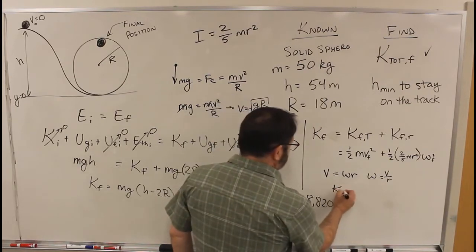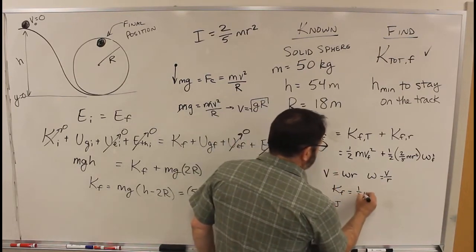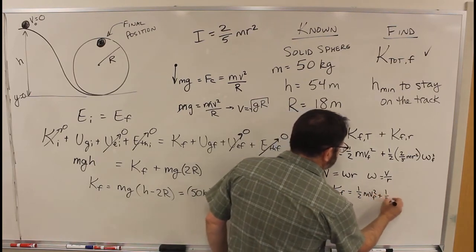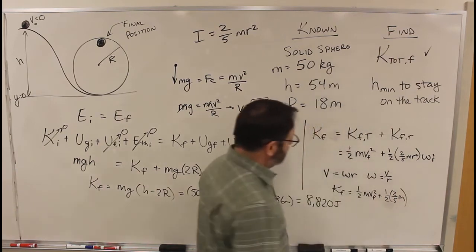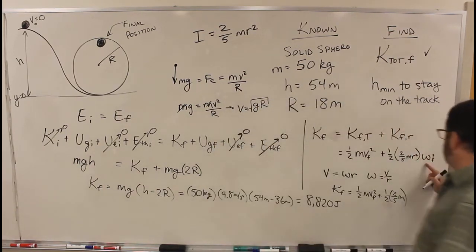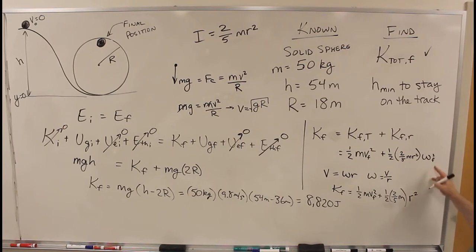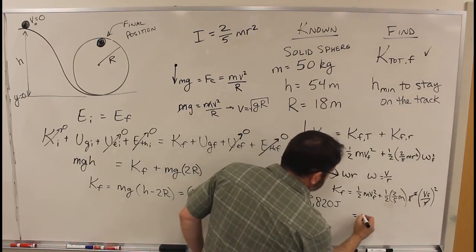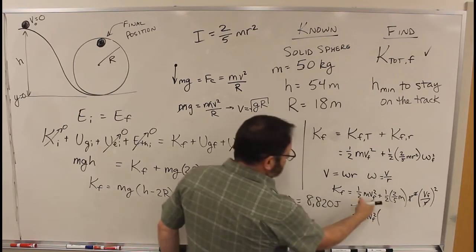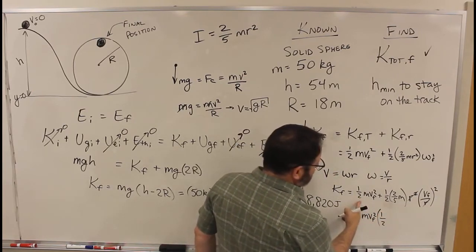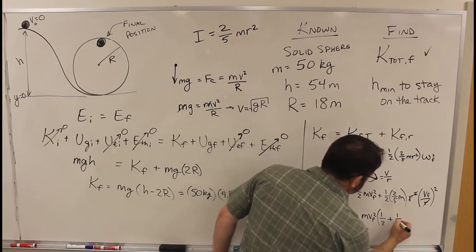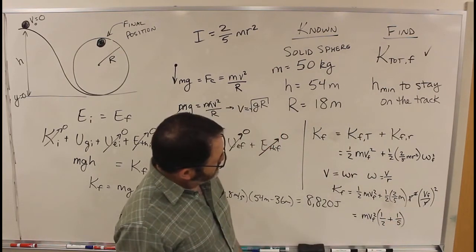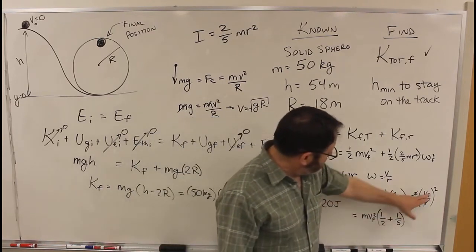So that means K final is 1 half MV final squared plus 1 half times 2 fifths M. Omega is V over R. So we've got here an R squared, so we've got here an R squared V final over R squared. The R squareds cancel out. So this becomes MV final squared times, there's a 1 half from this first term, and there's a 1 half times 2 fifths from the second term. So 1 half plus 1 fifth, MV final squared.